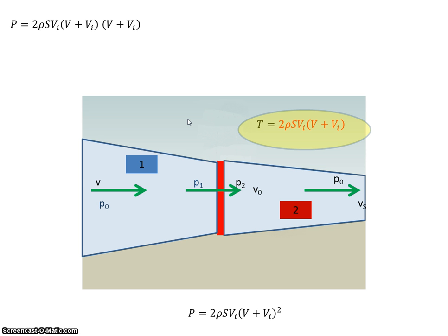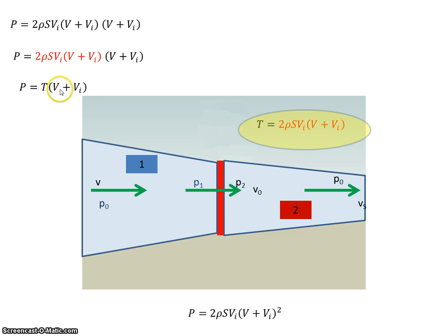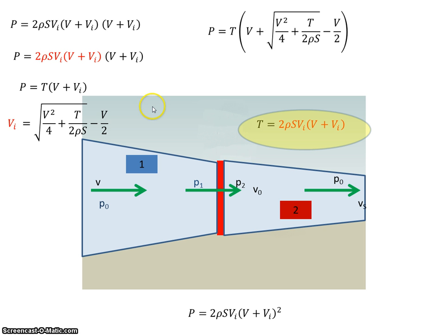Similarly with the power — that there is the thrust, and V plus VI. Just rearranging that equation, I get that the power is equal to thrust times velocity plus the induced velocity.